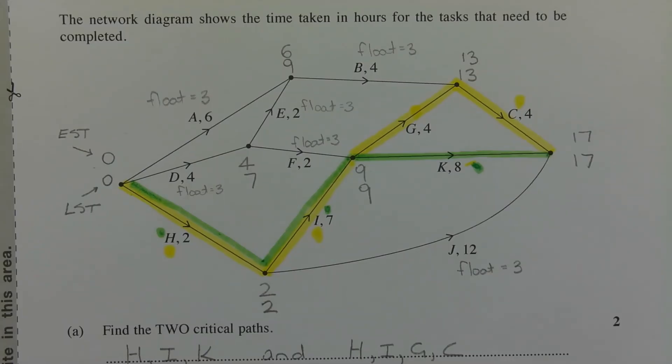We need to identify one task on the critical paths that we found in Part A in order to reduce the total activity time by three hours. In other words, rather than finishing at 17 hours, we finish in 14 hours. So if we look at both critical paths that we found in Part A, we have H, I, and K, and we have H, I, G, and C. What we do notice is that H and I are common tasks on both of those critical paths.